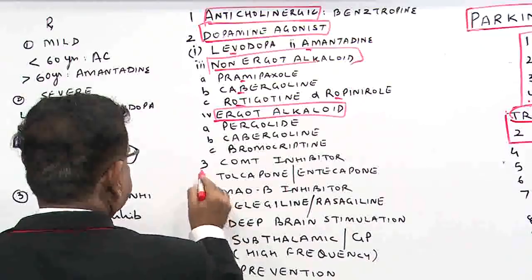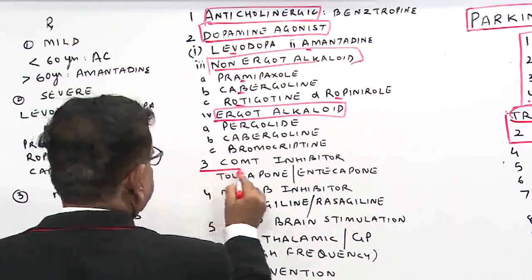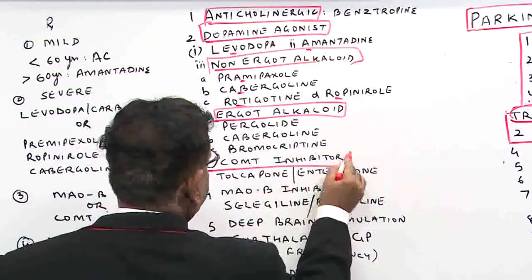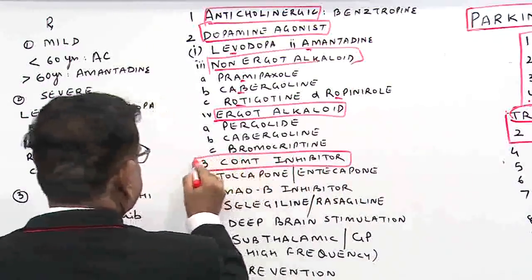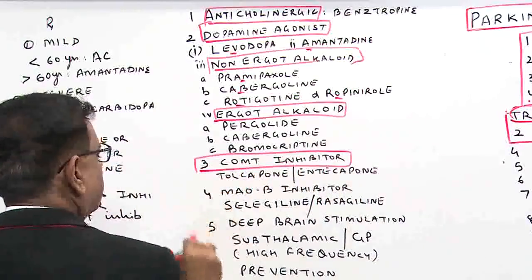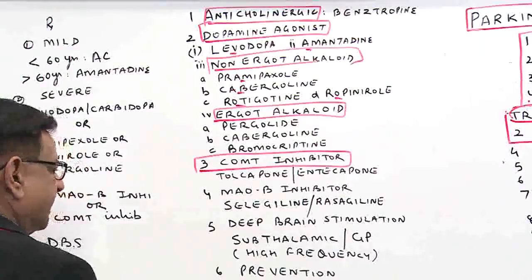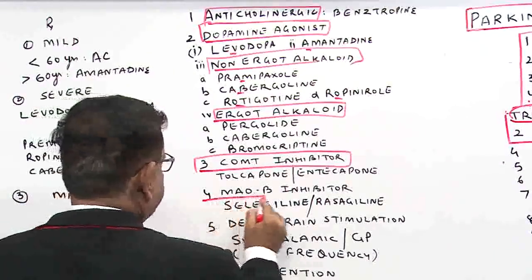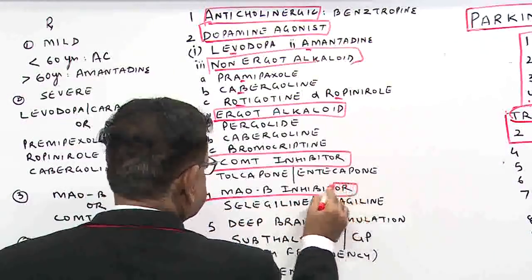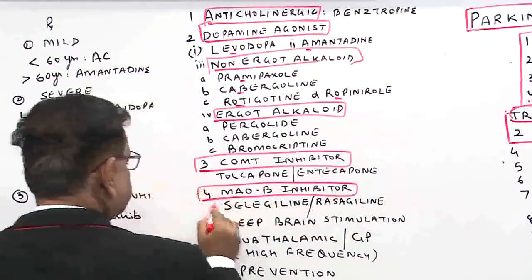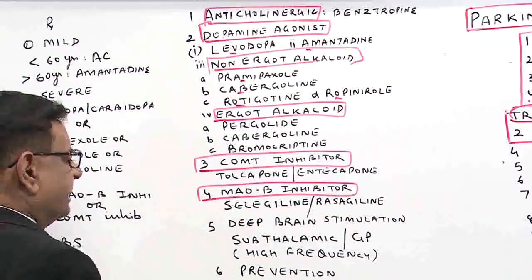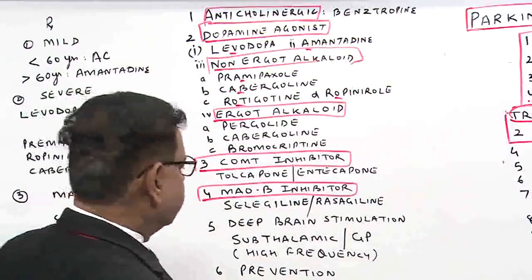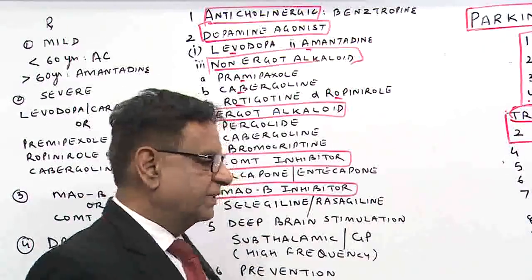The third category of drugs is COMT inhibitors: tolcapone and entacapone. Then MAO-B inhibitors: selegiline and rasagiline.